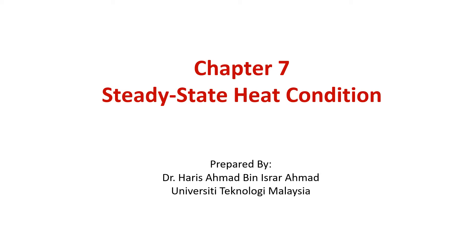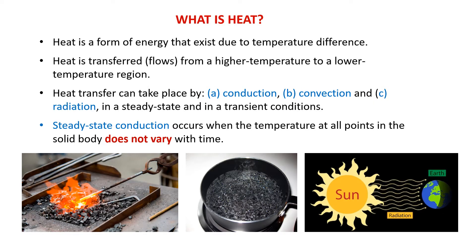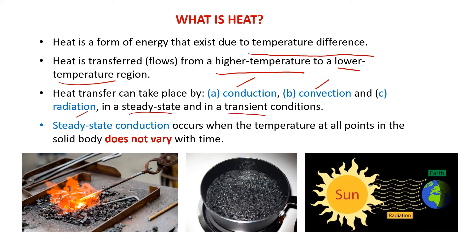In this video, we are going to discuss chapter 7 regarding steady state heat conduction. Heat is a form of energy that exists due to temperature difference. Heat is transferred or flows from a higher temperature to lower temperature region. Heat transfer can take place by conduction, convection, as well as radiation in a steady state or in a transient condition.